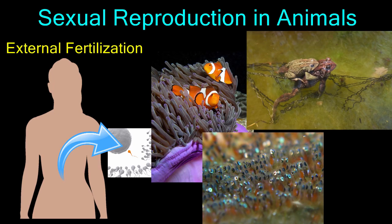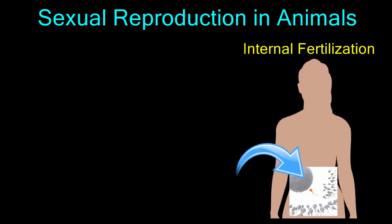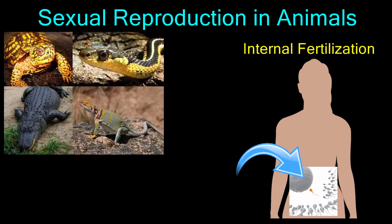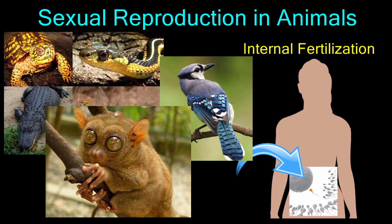Sometimes one or both parents will remain to guard the fertilized eggs. This pair of frogs may look like they are having sex, but actually the male is just hitching a ride on the female's back to ensure that his sperm are released over the eggs immediately. Internal fertilization means that egg and sperm fuse inside the female's body and therefore requires the act of sex. Reptiles like snakes and lizards, birds, and mammals like we humans use internal fertilization to reproduce.